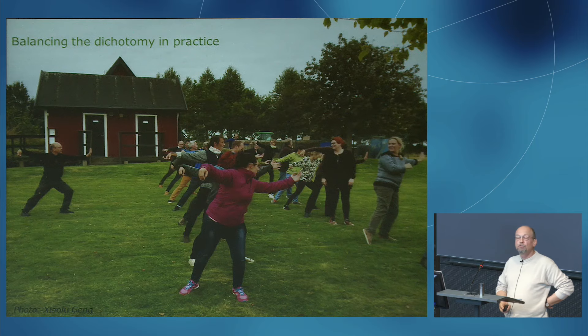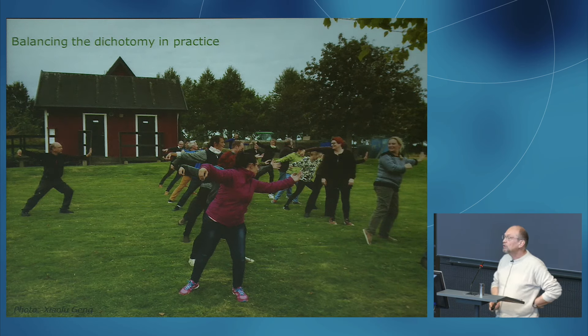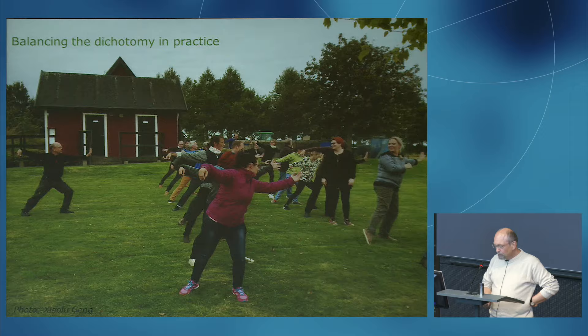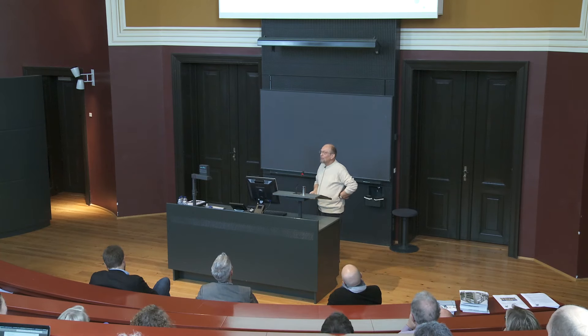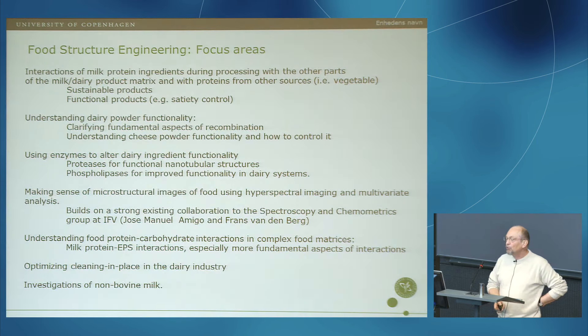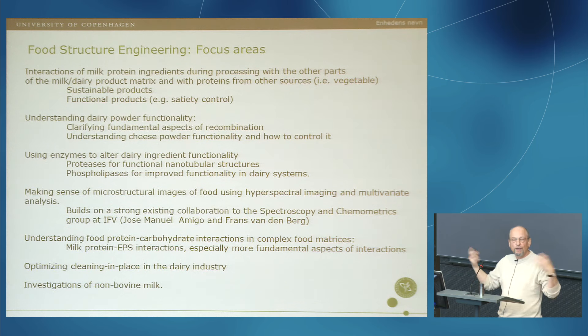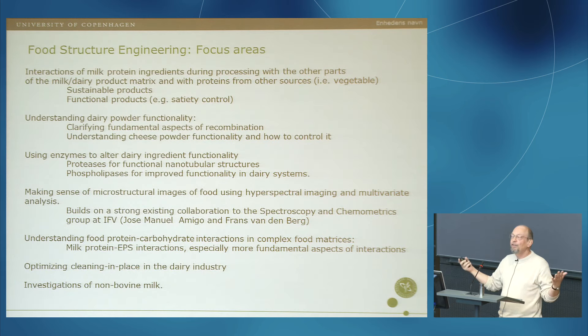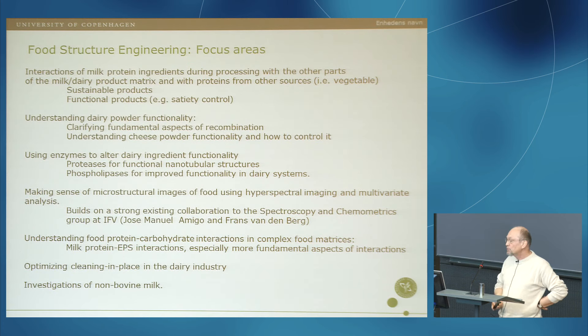Doing rocket science or more basic studies is in some ways simpler because you can focus more on specific aspects. But here we always have to think about the consumer in the end. Our focus areas for food structuring include the interaction of milk protein ingredients during processing with other parts of the matrix. What happens if you add a given ingredient into a milk matrix - and milk is really very complex. We also look at utilizing proteins from other sources, such as vegetable proteins, for sustainable and functional products.